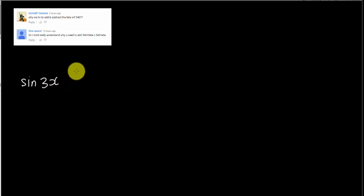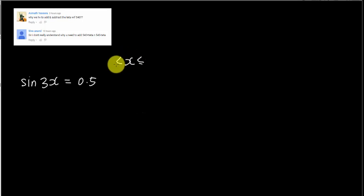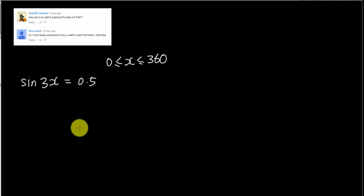Let's say I have sin 3x equals 0.5, and x is the value between 0 and 360. This is just a simple example. How many answers will there be for x? I would say you will have four answers or even more than four, not only two answers. Why? Because sin 3x means later all your angles have to be divided by 3.